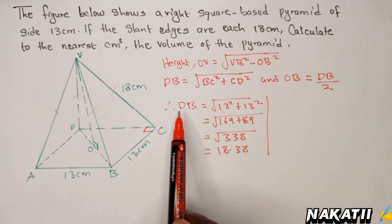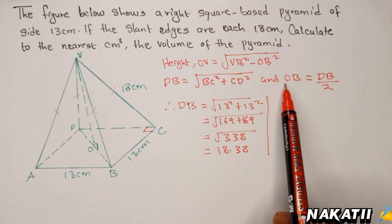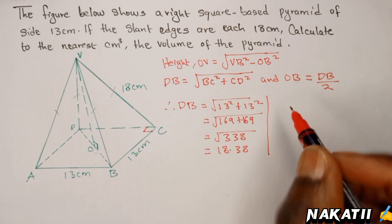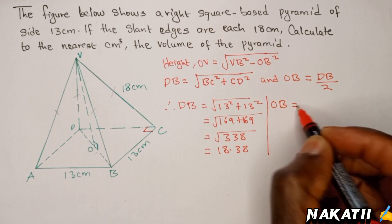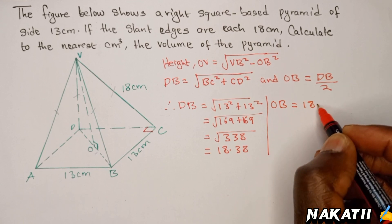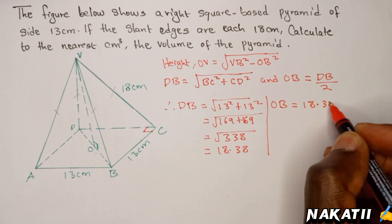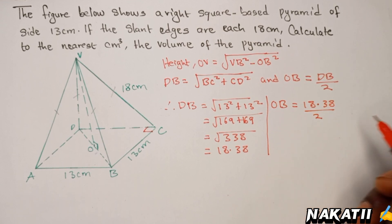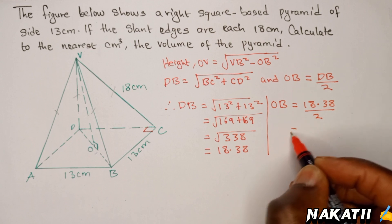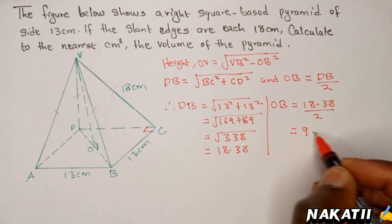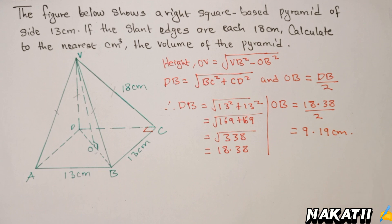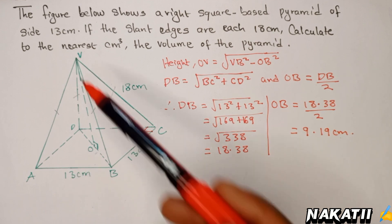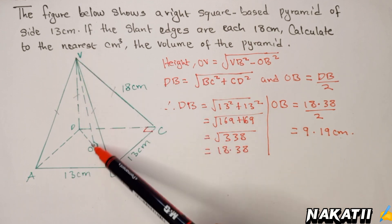Using your calculator, the square root of 338 is 18.38 to four significant figures. Therefore, when we have DB we can get OB. OB is simply 18.38 divided by 2, which gives 9.19 centimeters.